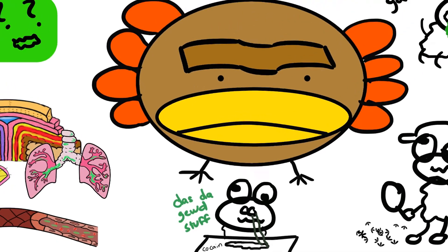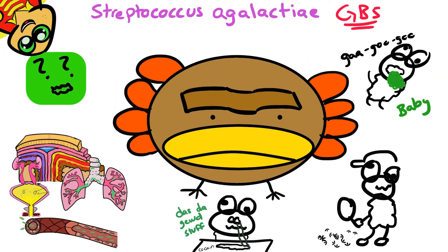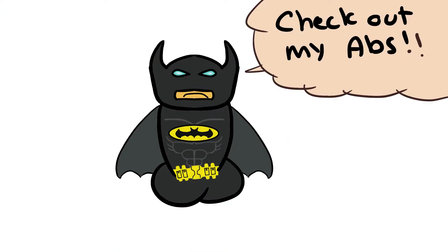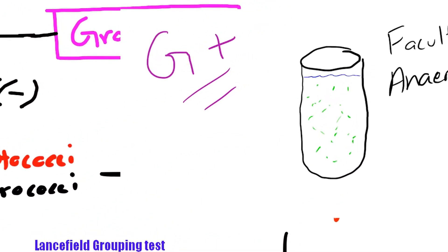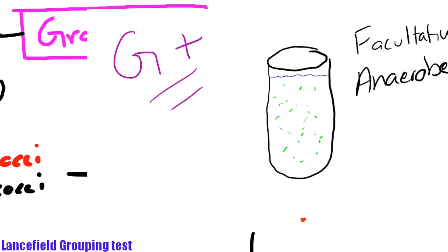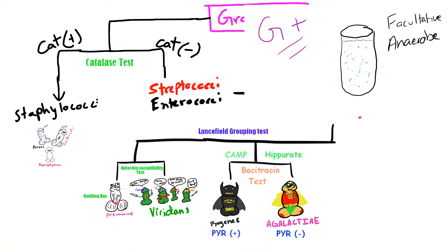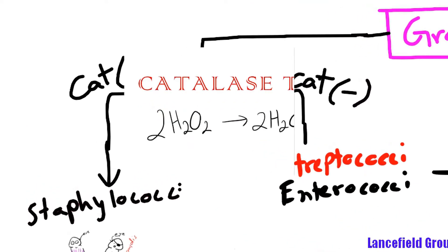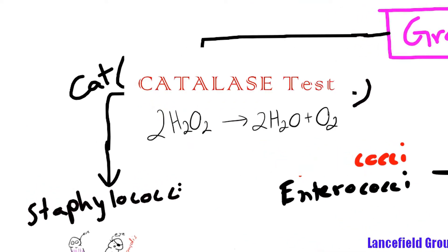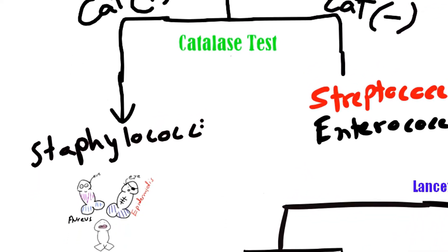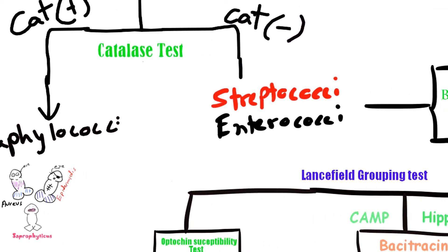We can also cover some of the mechanisms of action for some of the antibiotics we can use against it. Streptococcus agalactiae is a gram-positive Streptococci facultative anaerobe — they normally use oxygen but can survive without it. It's catalase-negative, so it can't break down hydrogen peroxide to water and O2, which is a test used to distinguish Staphylococcus from Streptococcus organisms.